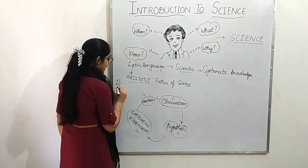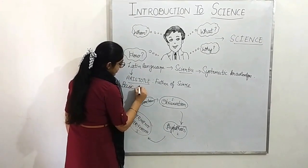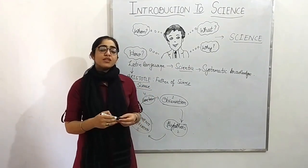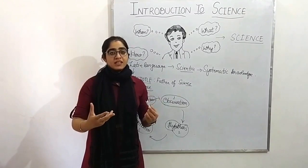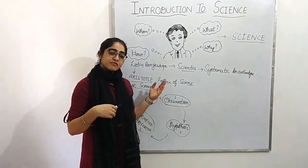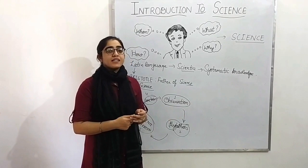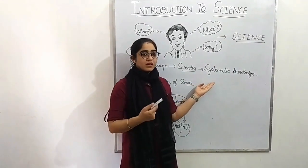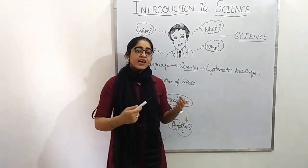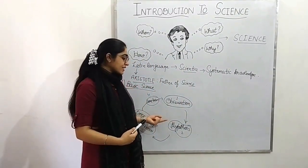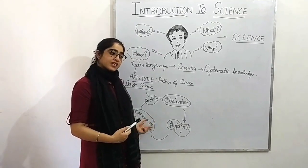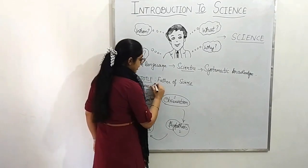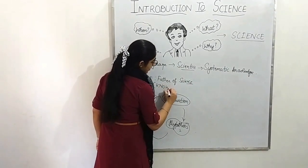These four steps are part of the first category of science, and that first category is basic science. Basic science means knowing something. So from here we find the definition of science: science is the systematic knowledge which we acquire through experimentation and observation. Basic science simply means knowing something.